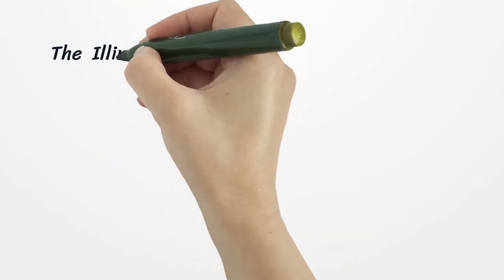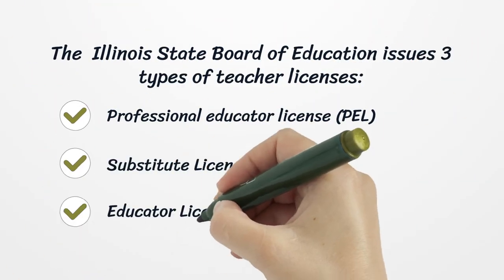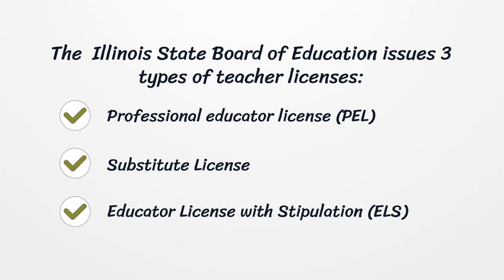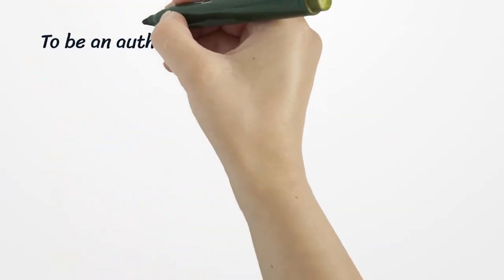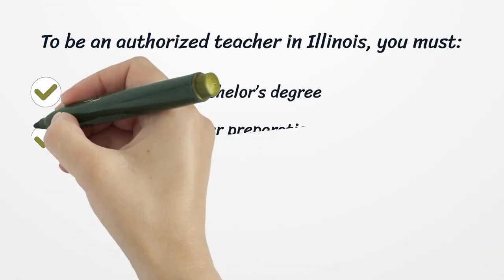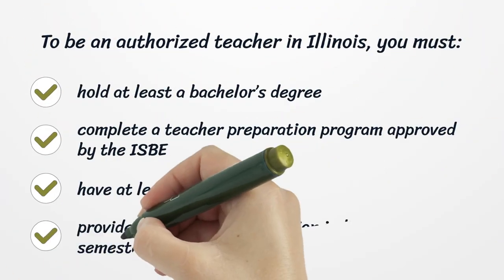The Illinois State Board of Education issues three types of teacher licenses: the Professional Educator License, the Substitute License, and the Educator License with Stipulation.